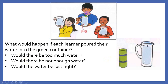Now what would happen if all of them poured the water into this container? Would there be too much water? Yes, the water will spill out. Would there not be enough water? No, there will be more than enough water. Would the water be just right? No. As you know, the capacity of this green container is less than these 3 jugs.